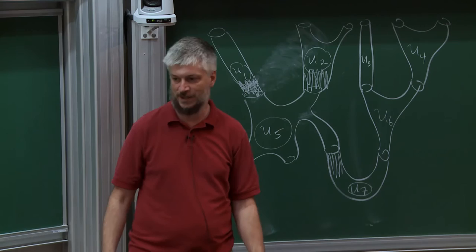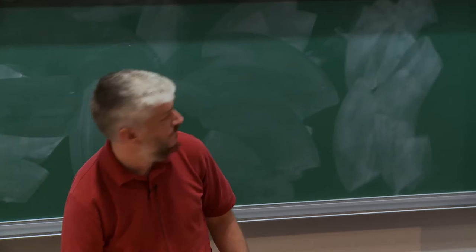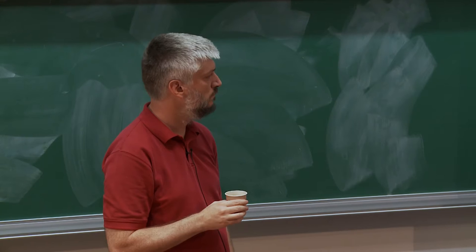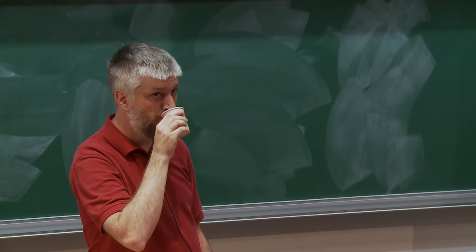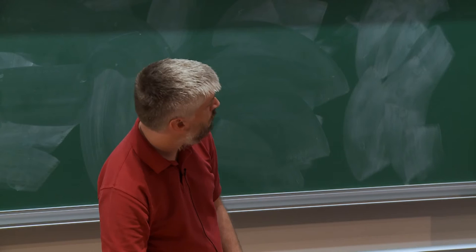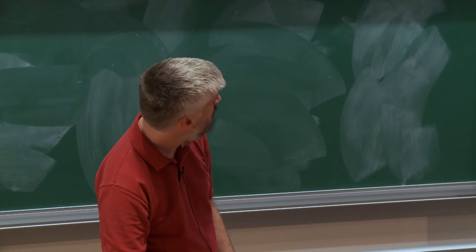Are there any questions about this general picture before I plunge into my next example? [Questioner:] So when we do the gluing, for example the U_7 part dominates in that end, and we do the gluing construction using S_0 corresponding to whatever the highest eigenvalue is. But I'm confused about how we do the gluing in between these, like in the interior of U_5 — how do we glue the part coming from U_2 and the part coming from U_7? How does that happen automatically?